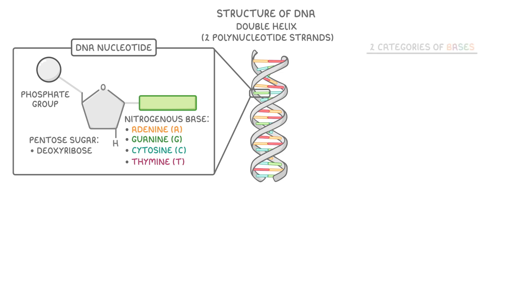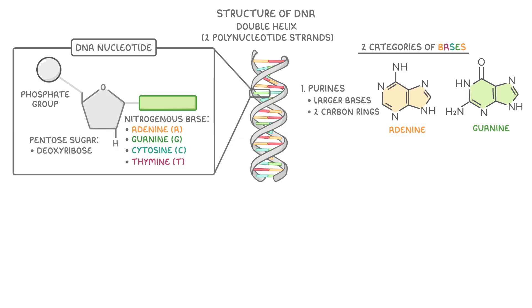Now in reality you can basically think of there being two categories of bases. There are purines, which are larger bases made up of two carbon rings, so that's adenine and guanine. And then there's also pyrimidines, which are smaller bases with only one carbon ring. So that's cytosine and thymine.